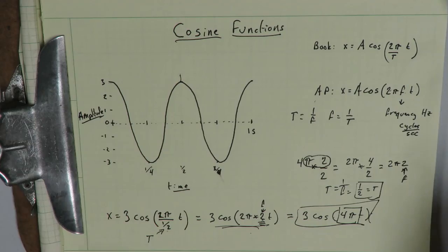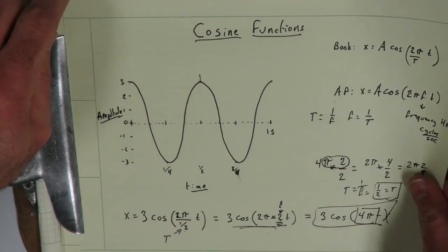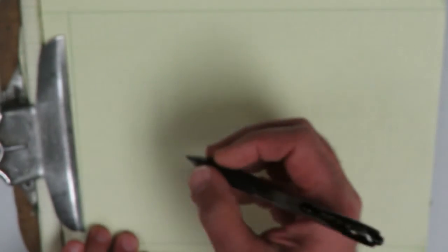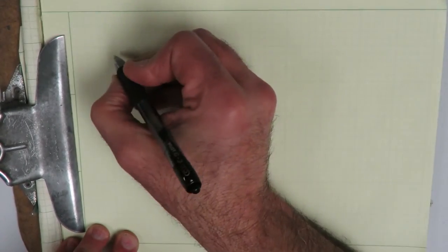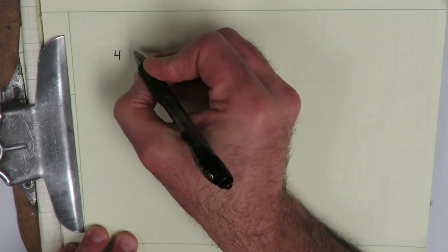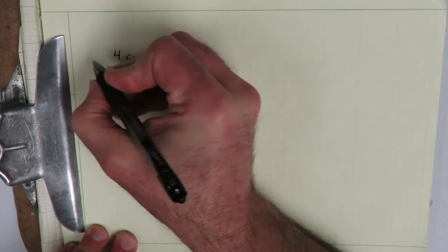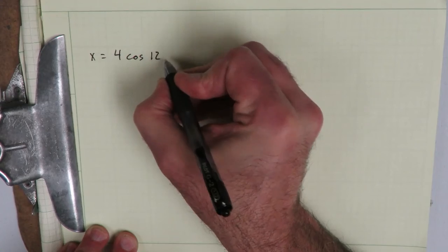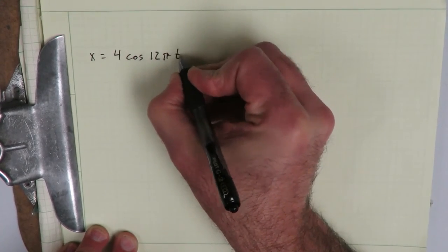Okay, let's try a couple of those for practice. Alright, so suppose we have, we are given x equals 4 cosine 12 pi t.